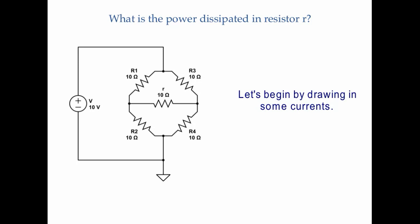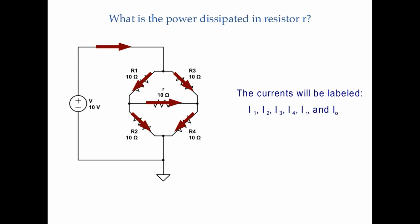Let's begin by using Kirchhoff's rules and drawing in some currents. The red arrows represent the currents in the circuit — these are my guesses as to which way the current is going to go. They'll be labeled I1 through I4 for each resistor R1 through R4, I-little-r for the resistor little r, and I0 for the current in the outer branch going through the battery V. So there are six total.